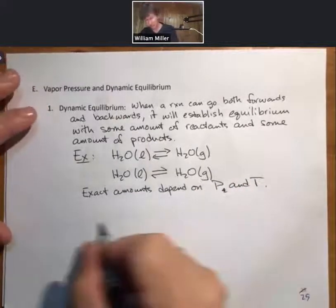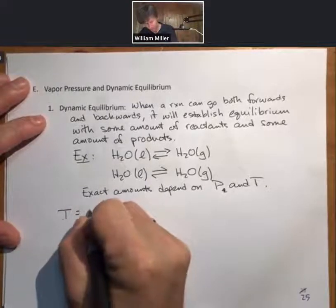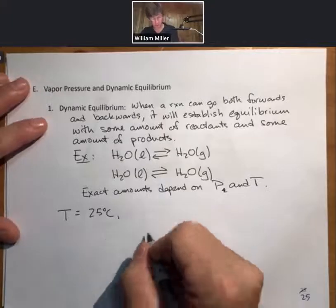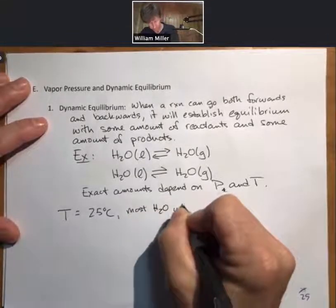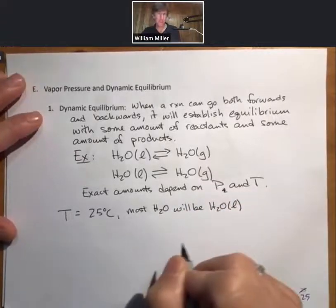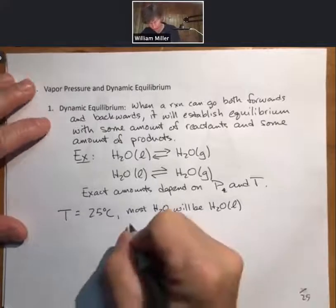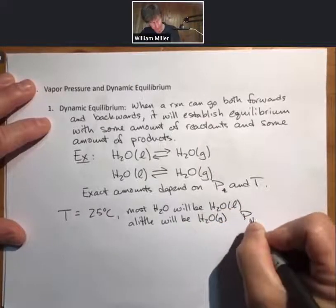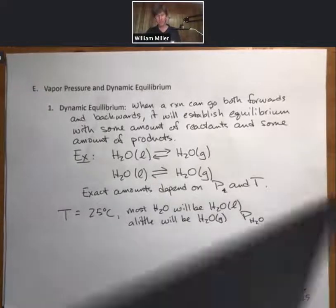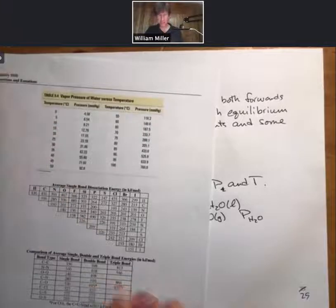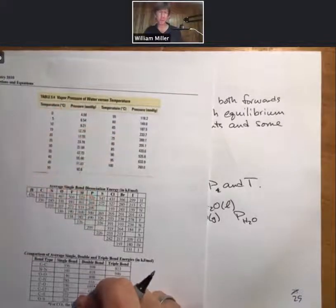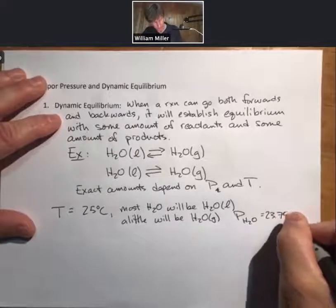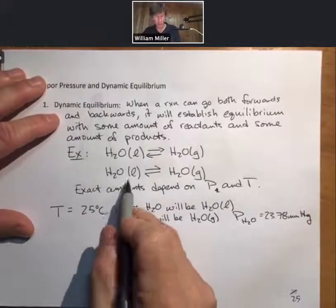As an example of that, if the temperature was 25 degrees Celsius, then most H2O will be water, although a little will be H2O gas. I know this because the vapor pressure of H2O at 25 degrees Celsius is 23.78 millimeters of mercury.